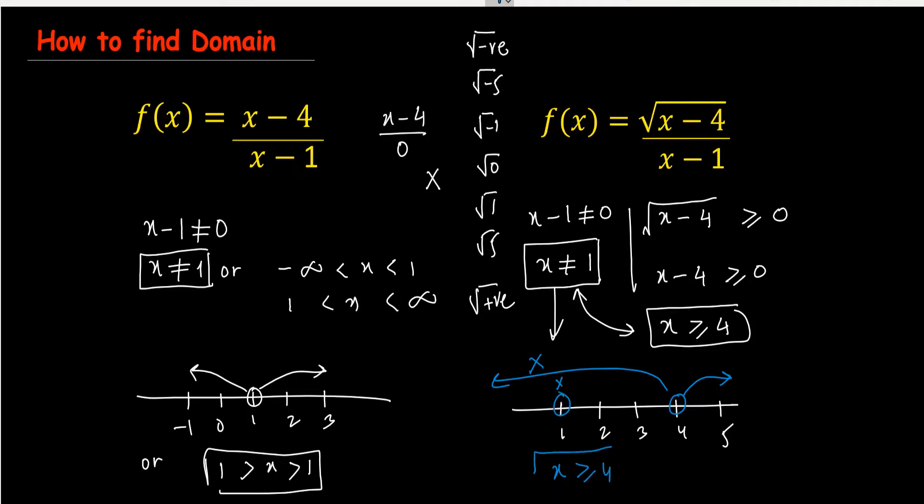So the domain will be only x is greater than or equals to 4. This will not come in the domain side, so x is only possible here, more than 4, all the values. So by this way we have found the domain of this fraction with radical and without radical.